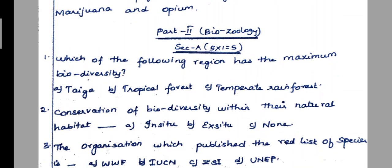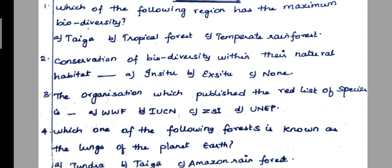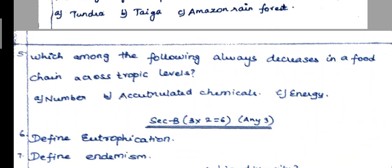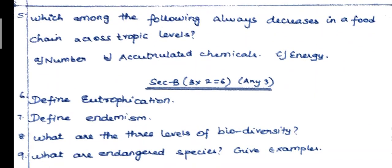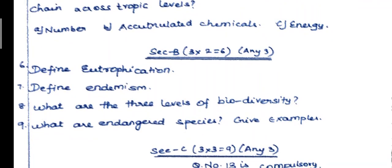If you look at the biology, there's one word. Next, 2 marks, 4 plus 3. 6th question: define eutrophication. 7th question: define endemism. 8th question: what are the three levels of biodiversity?